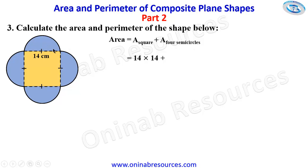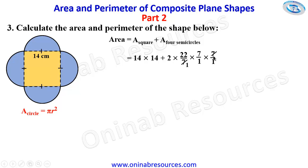The 4 semicircles form two complete circles, so we find the area of one circle and multiply by two. Area of a circle is pi r squared. So we have 2 times 22 over 7 times 7 over 1 times 7 over 1. Seven goes into 7 gives 1, and again gives 1, leaving us with 2 times 22 times 7. For the square: 14 times 14 gives us 196. Plus 2 times 22 gives 44, and 44 times 7 gives 308. Adding them together we have 504 square centimeters, representing the area of the shape.